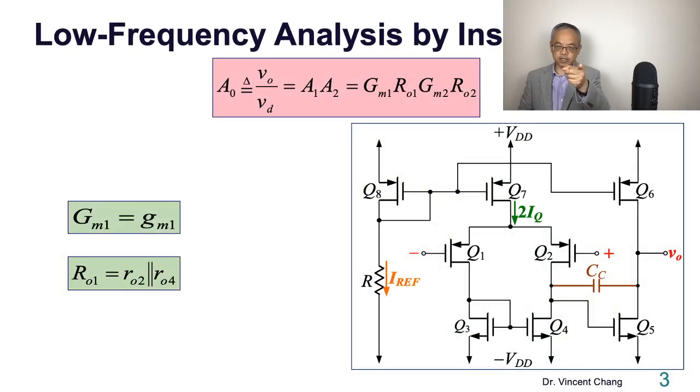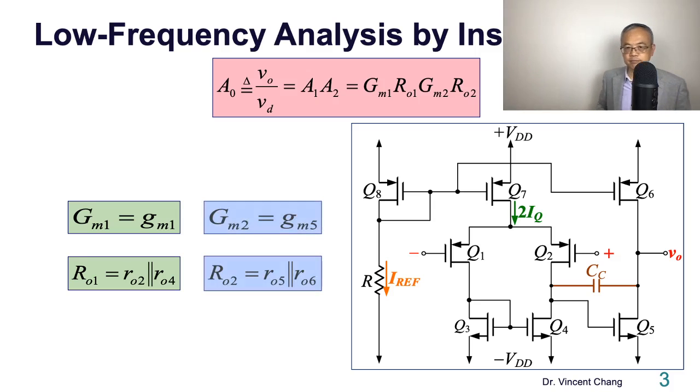So where is GM1? This is GM1, decided by the transconductance of Q1. And R1, capital R1, is the parallel combination between two and four. The second stage, the GM2, the capital GM2, is decided by the individual transconductance of Q5. Capital R2 is the parallel combination of 5 and 6.